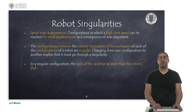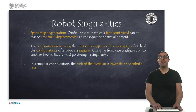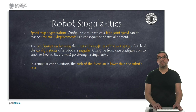For instance, a serial manipulator robot has up to eight different configurations. In the interior boundaries of the workspace of each of these configurations, there's a singular configuration. Therefore, changing from one configuration to another implies that the robot must necessarily go through a singularity, which will cause high speeds in some of the robot joints.